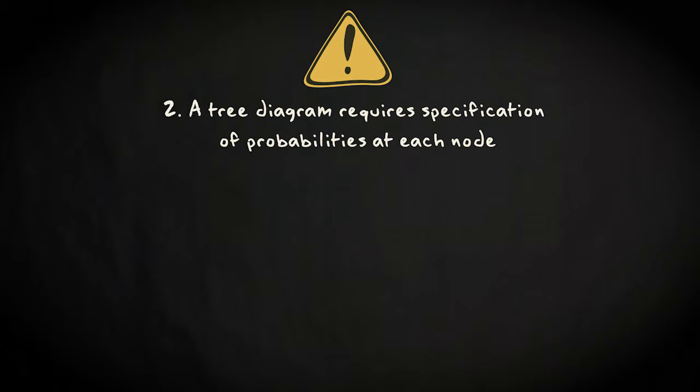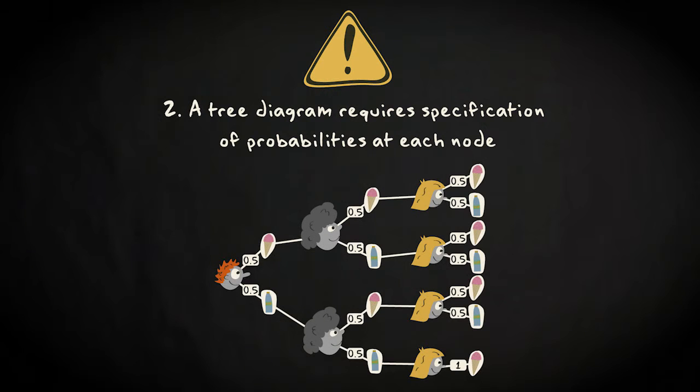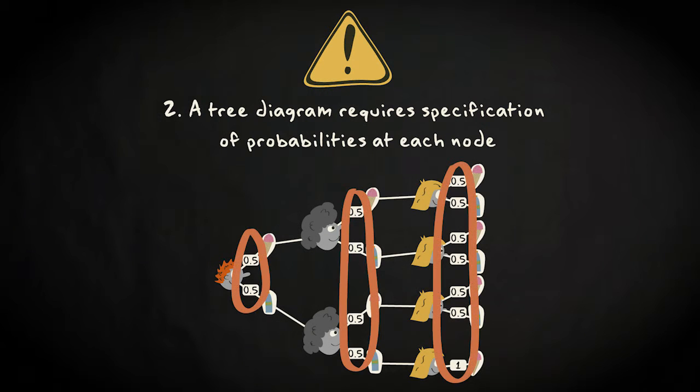Secondly, to actually apply a tree diagram to quantify probabilities requires specification of the probabilities at each node. Sometimes this may be easy because you can assume that options are for instance equally likely and independent from previous choices.